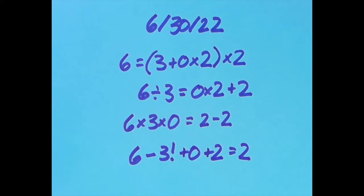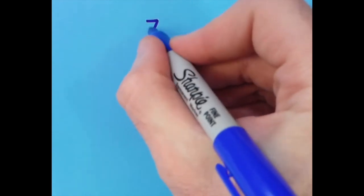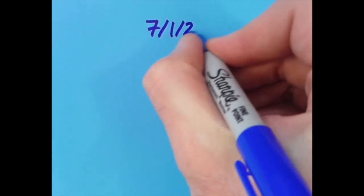Now today's the last day of June, which means tomorrow is the first day of July, and so we can write tomorrow's date as 7/1/22. So go ahead and see if you can come up with an equation for the digits in this date.